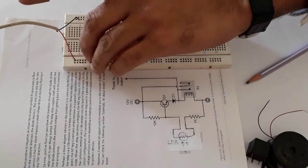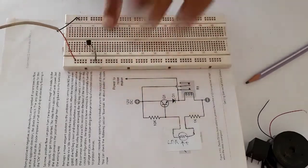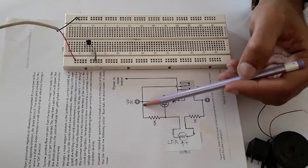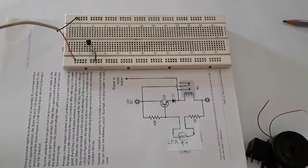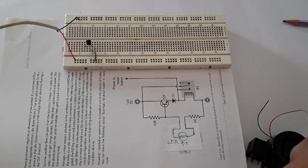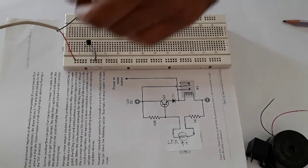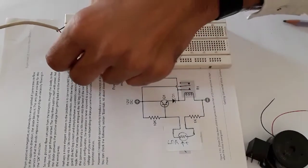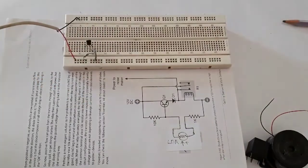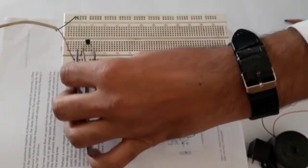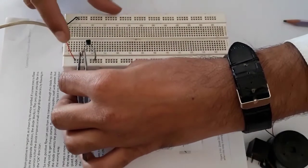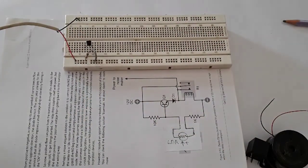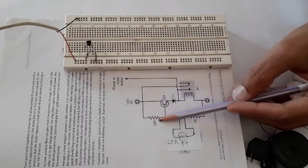The collector pin of the transistor will go to this positive terminal. Then the resistor between the base and positive terminal, the resistor is 10 kilo ohm. And we have put the resistor between the base and the positive terminal.